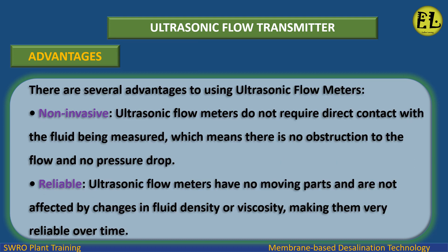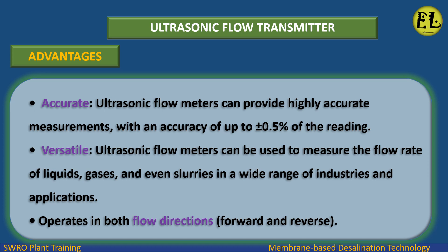Advantages of ultrasonic flow meters: Non-invasive — ultrasonic flow meters do not require direct contact with the fluid being measured, which means there is no obstruction to the flow and no pressure drop. Reliable — they have no moving parts and are not affected by changes in fluid density or viscosity, making them very reliable over time. Accurate — they can provide highly accurate measurements, with an accuracy of up to plus or minus 0.5% of the reading. Versatile — they can measure liquids, gases, and even slurries across a wide range of industries, and operate in both forward and reverse flow directions.